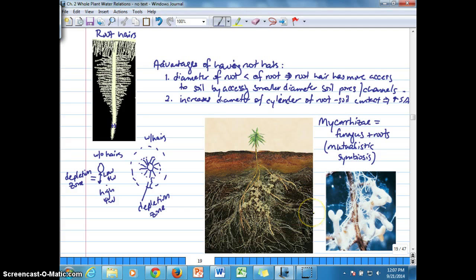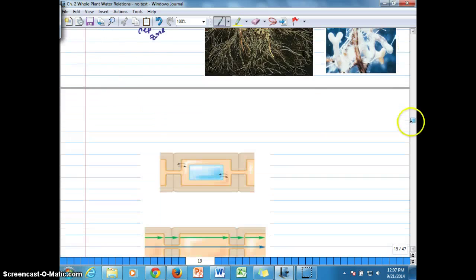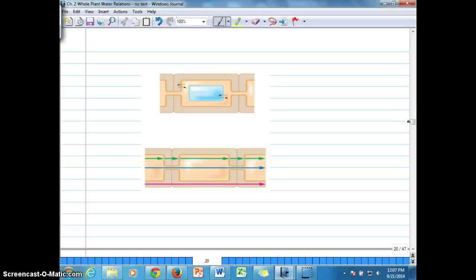Over here we see the extensive mycelial network, and on the right-hand side we can see that interface between the fungus and root for an ectomycorrhizae. We'll talk about ectomycorrhizae versus arbuscular mycorrhizae more when we get into chapter 3 for nutrient uptake. Now the next topic has to do with the question of, now that the water has reached the root surface, how does water basically diffuse from the root epidermis or the root hair to the root xylem?